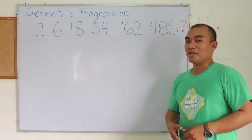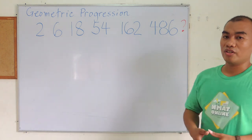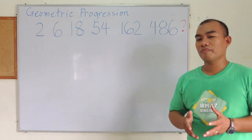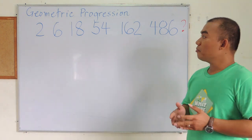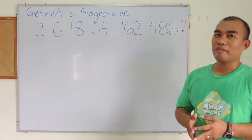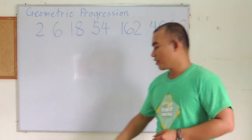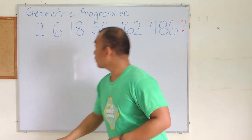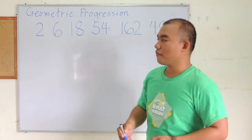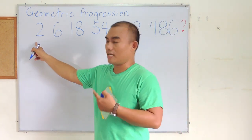Another type of series is geometric progression. In a geometric progression, each number is multiplied by a common factor. For example, from 2 to 6 — to determine the common factor, we divide 6 by 2, which gives us 3.